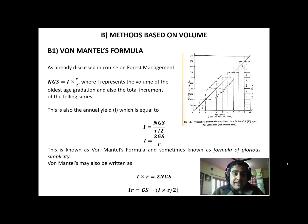If you decide that you are going to take the entire increment as yield — not just part of it — that is what we call von Mantel's formula.